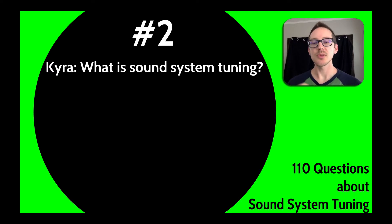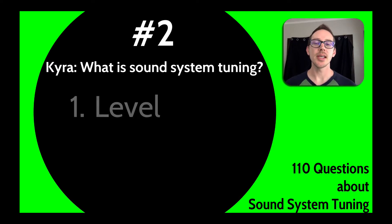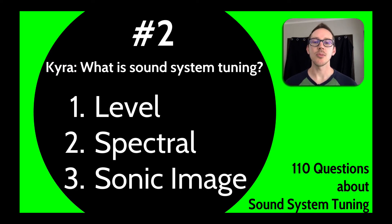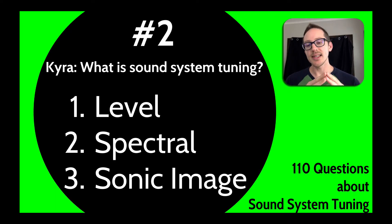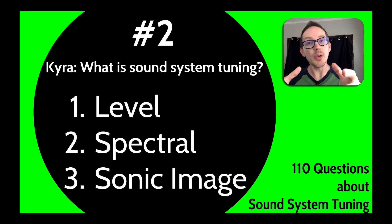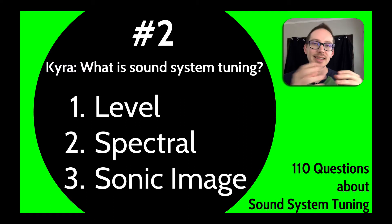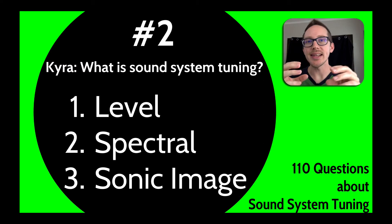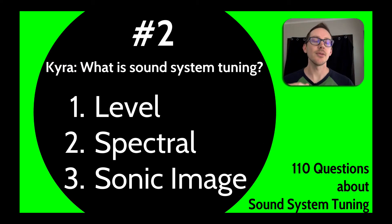The principles of minimum variance can be broken down into minimum level variance, spectral variance, and appropriate sonic image. That means the sound is not going to be super loud in the front and then really quiet in the back, or really bright and brittle in the front and then really dark and dull in the back.